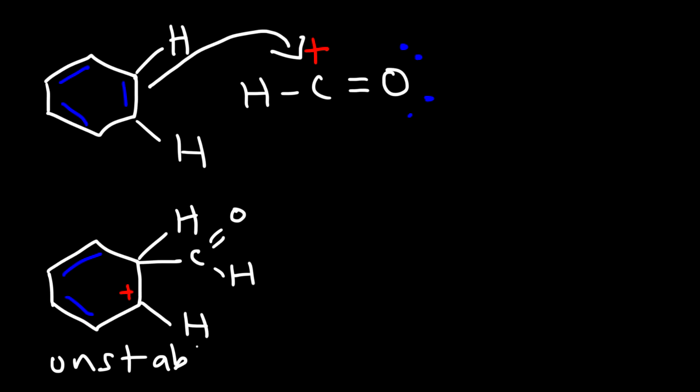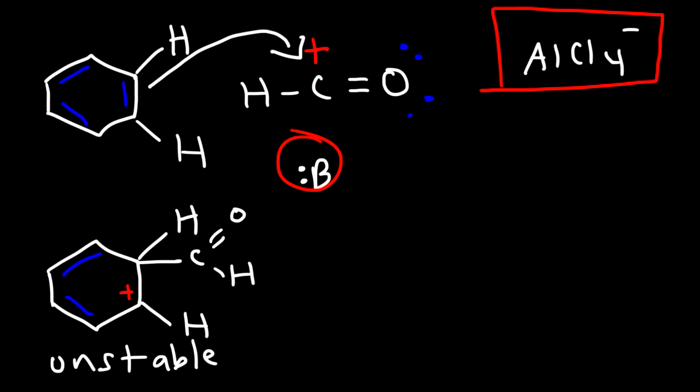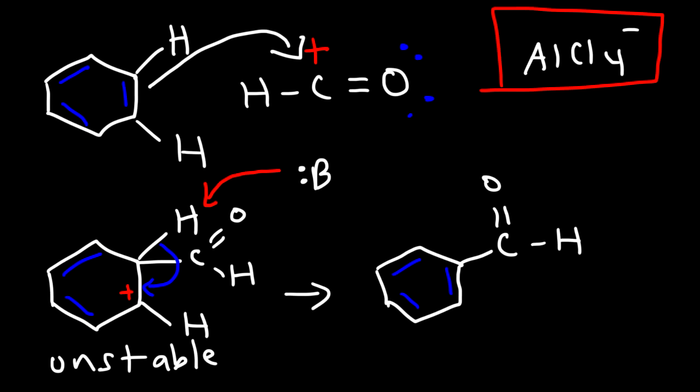Now what we need to do is regenerate the aromatic ring. And so we need to use a base. And right now, the only other base that's around is AlCl4 minus, or the base could be the solvent, depending on what's in the solution. But I'm going to use a generic base for this example. The base is going to go for the hydrogen. And then the carbon-hydrogen bond will break, regenerating the pi bond. And so this will give us benzaldehyde as our product. And so the Gattermann-Koch reaction is very useful for converting benzene into benzaldehyde.